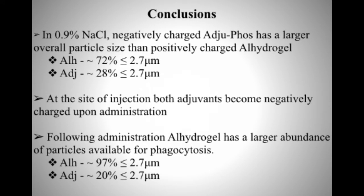To briefly conclude: in sodium chloride, Adjuphos is much larger in particle size than the positively charged Alhydrogel. Importantly, both adjuvants become negatively charged when administered into R10 medium, so zeta potential is largely independent of how cells would see these materials — the distinction between positively and negatively charged is no longer relevant here. Following administration of Alhydrogel into R10 medium, there is a larger abundance of particles available for phagocytosis, which is significant in terms of cell loading. You would therefore expect to see more Alhydrogel within cells than Adjuphos.